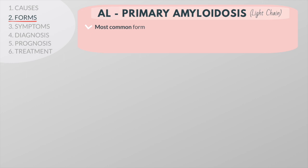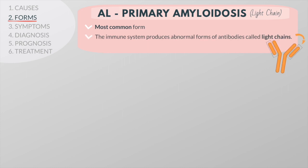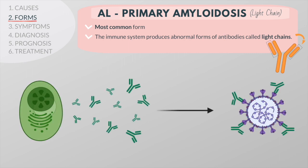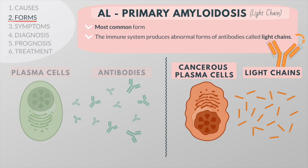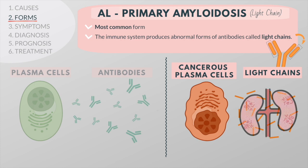AL, or primary amyloidosis, is the most common form of the disease. The body's immune system produces abnormal forms of antibodies called light chains. Normally, plasma cells in the bone marrow produce antibodies that fight infections. If a plasma cell becomes cancerous, it may produce extra pieces — light chains — which bind together, circulate in the bloodstream, and can deposit in organs throughout the body. The most commonly affected organs are the heart and kidneys.